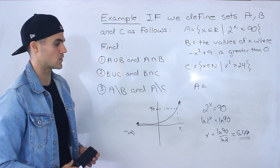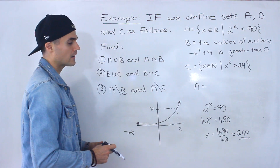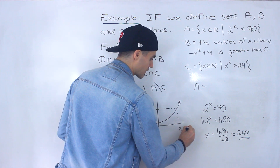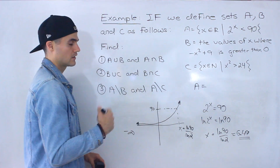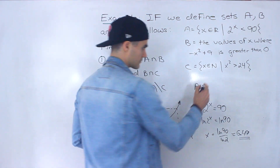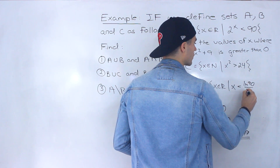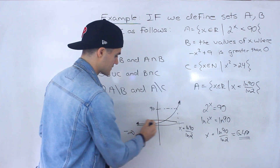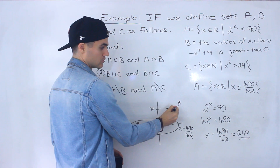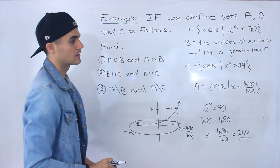However, you don't want to start bringing decimals into these types of questions — you want to leave everything as exact values. Your professor is probably going to take off marks if you start bringing in decimals. But it doesn't hurt to know approximately where we are in terms of numbers, so we'll keep that 6.49 in mind. We can actually redefine set A as: x is an element of real numbers where x is less than ln of 90 over ln of 2. Notice it's not less than or equal to, because 2 to the power of x has to be strictly less than 90.